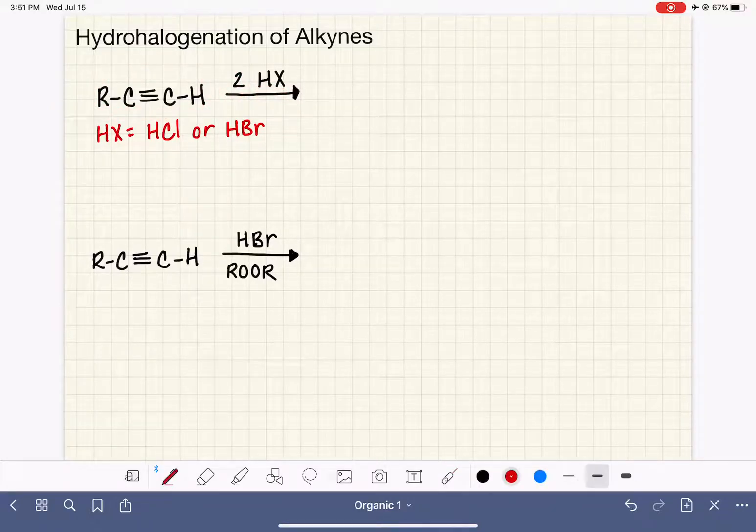If you recall from this reaction with the alkenes, we get a Markovnikov addition of the HX molecule. First, we put the hydrogen on the carbons of the alkene, and the hydrogen prefers to go to the carbon that already has the most hydrogens present.